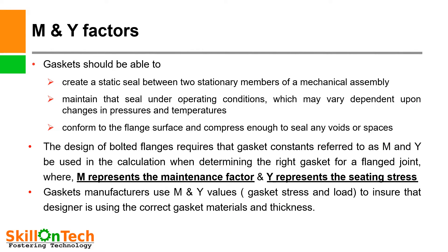M and Y factors of gasket: A gasket should be able to create a static seal between two stationary members of a mechanical assembly, maintain that seal under operating conditions which may vary dependent upon changes in pressure and temperature, and conform to the flange surface and compress enough to seal any voids or spaces. The design of bolted flanges requires the gasket constants referred to as M and Y to be used in calculations when determining the right gasket for a flange joint. M represents the maintenance factor and Y represents the seating stress. Gasket manufacturers use M and Y values, gasket stress and load to ensure the designer is using the correct gasket material and thickness.